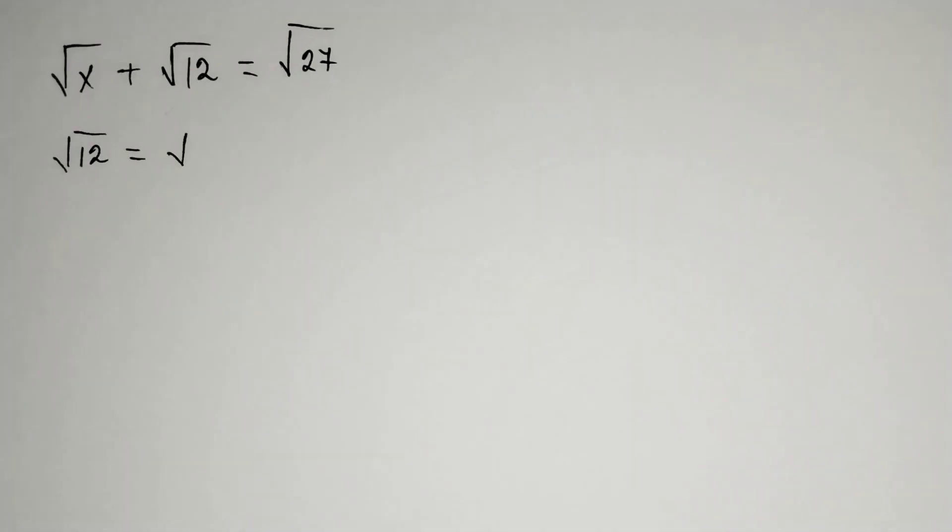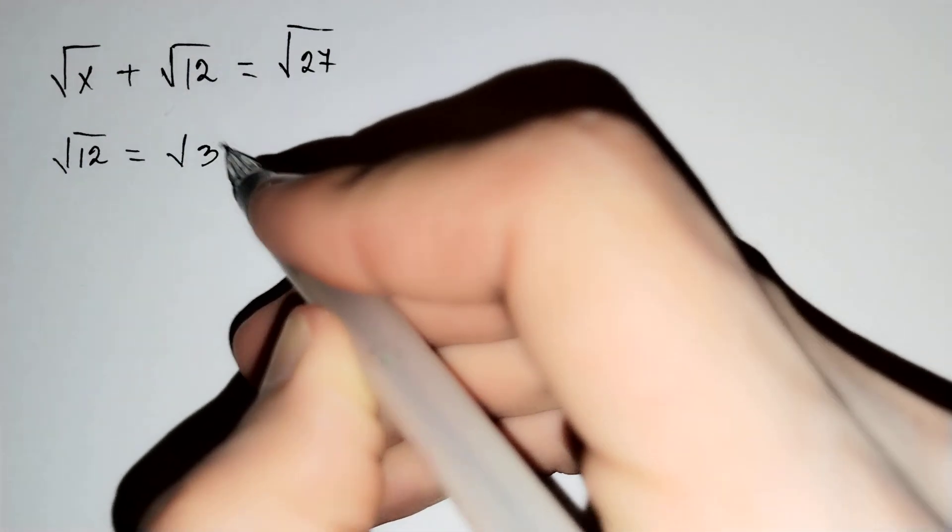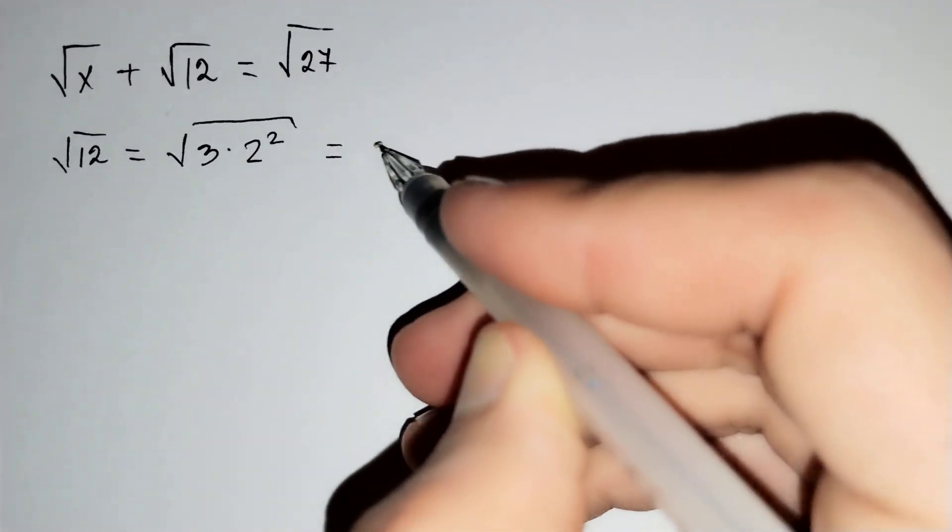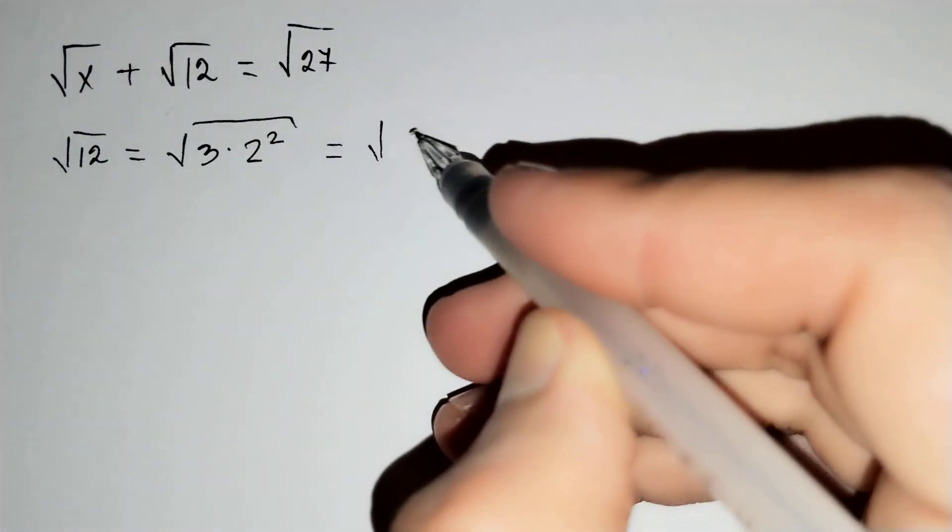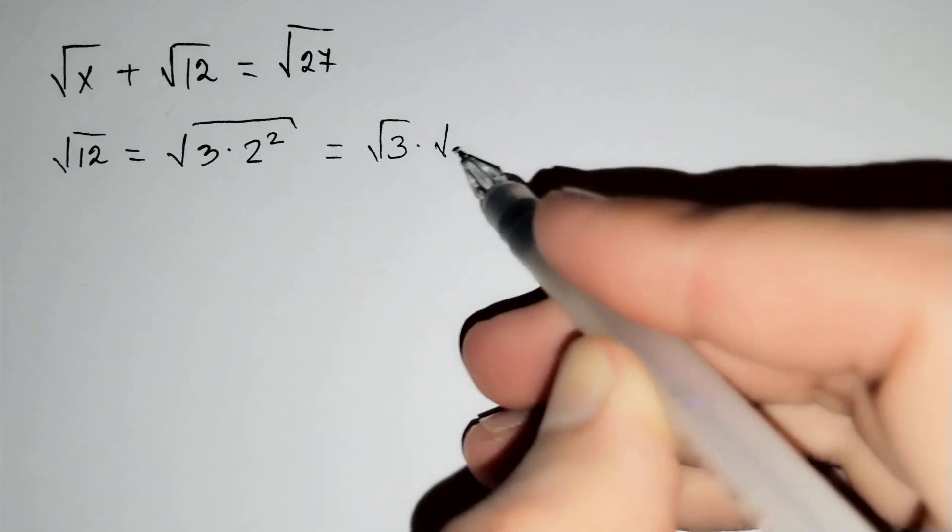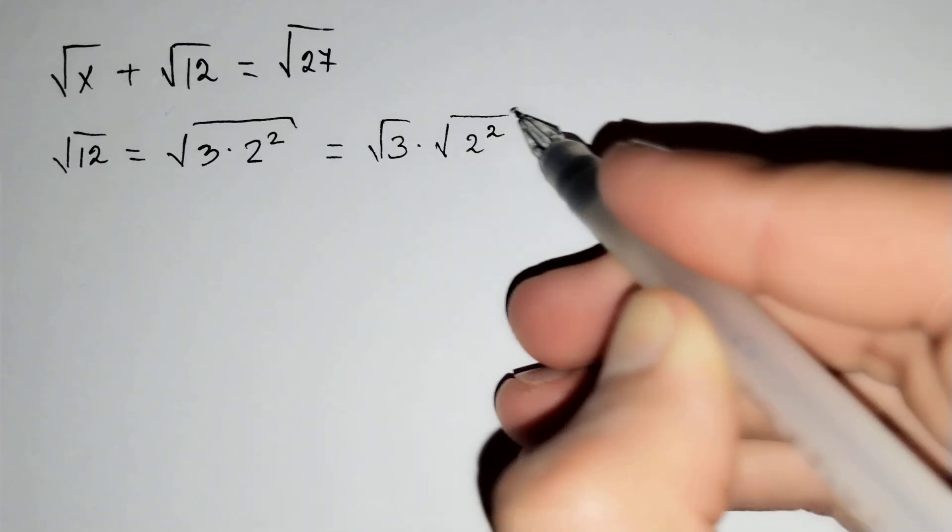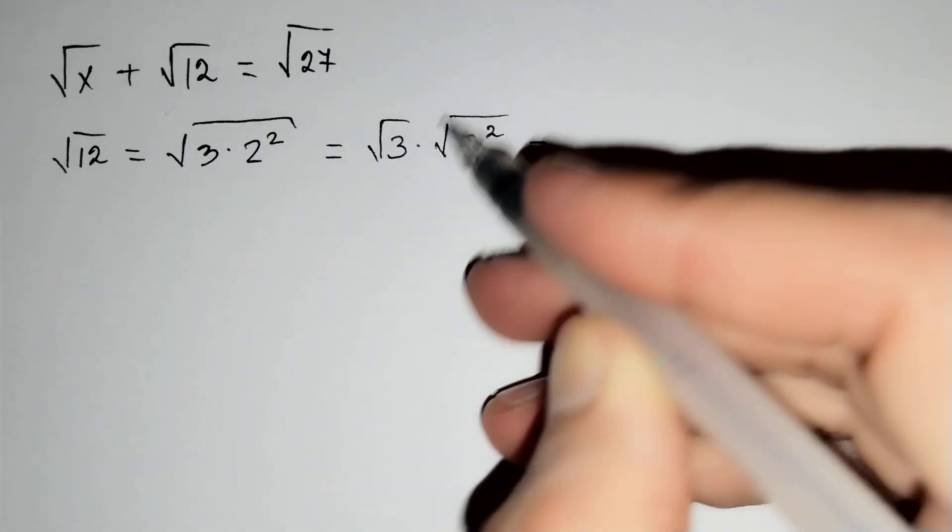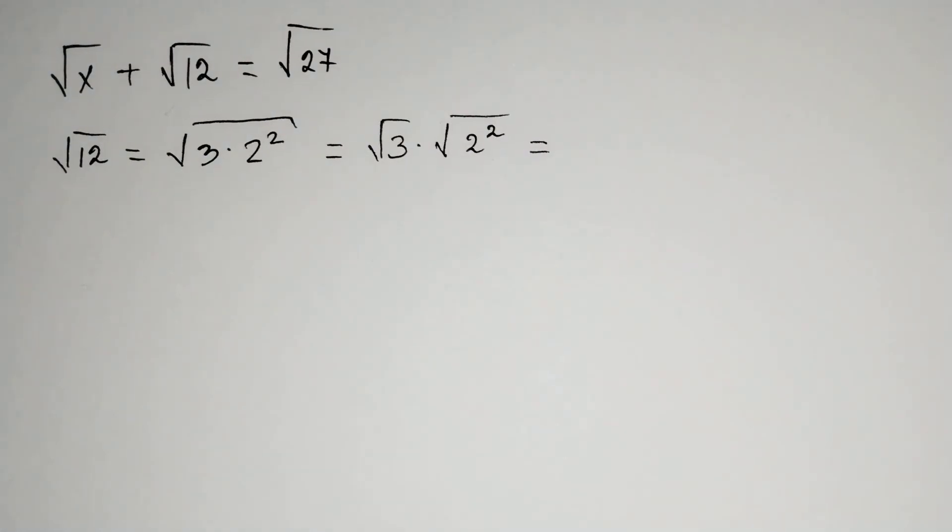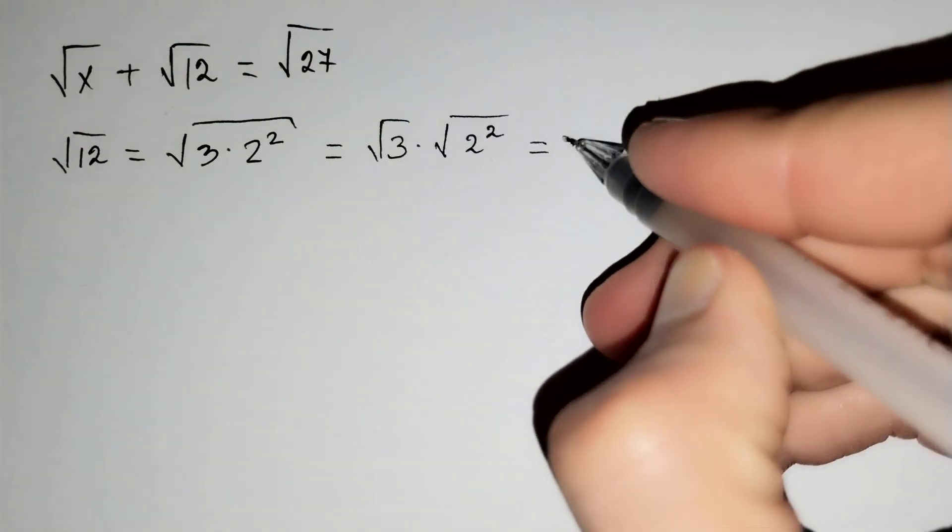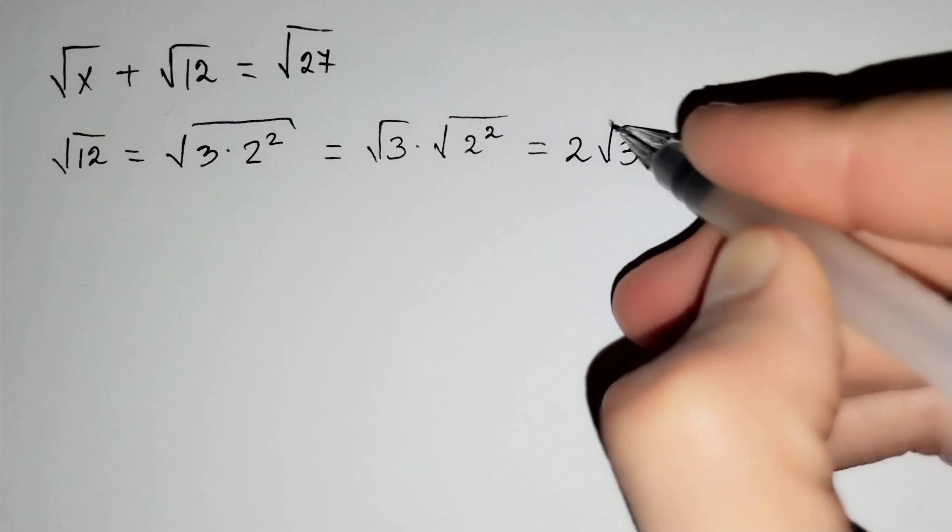Firstly, the square root of 12 equals the square root of 3 times 2 squared, which is the square root of 3 times square root of 2 squared. This is equal to 2 times square root of 3, which equals 2 square root of 3.